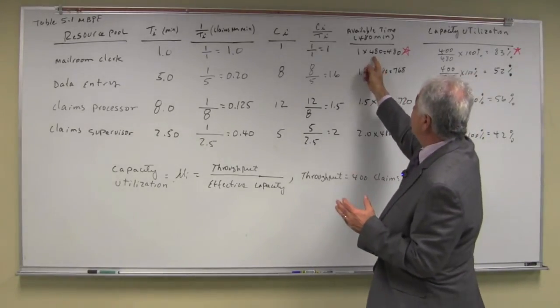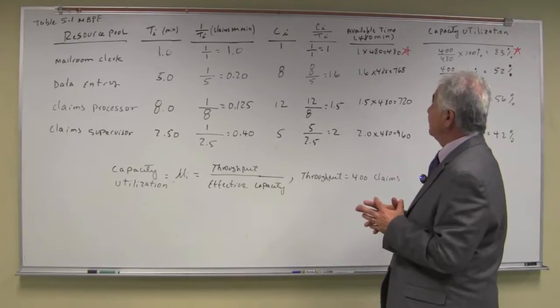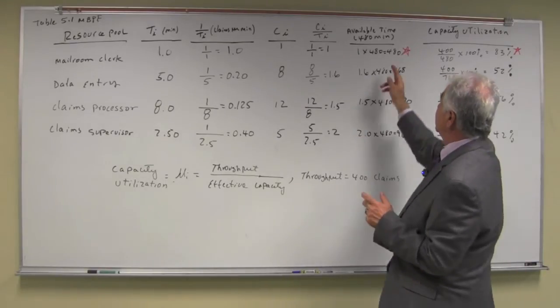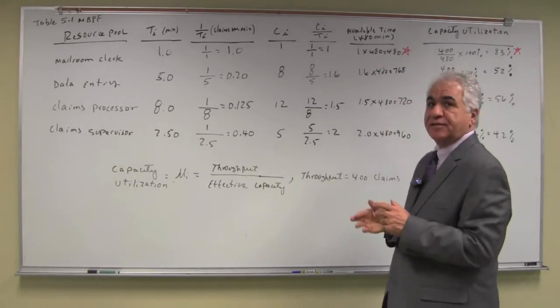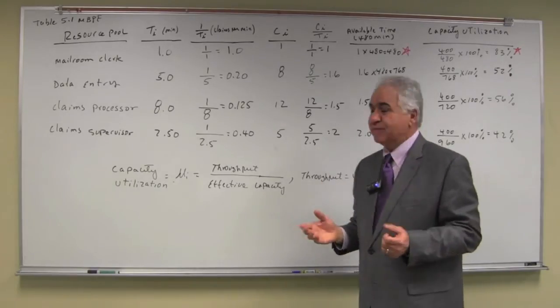So if we multiply 480 by the effective capacity of each unit, then we'll have the effective capacity of resource pool including time availability.